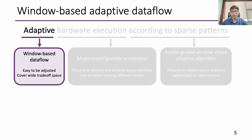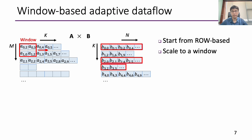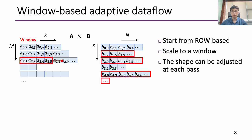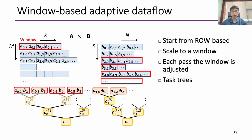We now introduce our window-based adaptive data flow. Starting from the row-based data flow, SpGEMM is decomposed as scalars from A multiplied by rows of B, and the window is slid along the k-dimension first. Our window-based data flow scales the scalar of A into a window, so that multiple scalar-vector multiplications are performed in parallel hardware units, and we still slide the window in the k-dimension first.